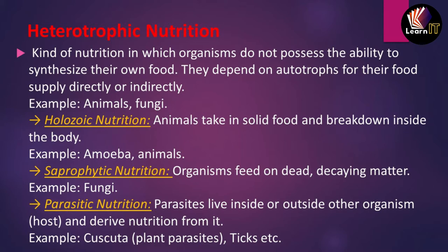Examples of heterotrophs are animals and fungi. Some organisms depend directly on plants and some depend indirectly on plants, which are the autotrophs. Heterotrophic mode of nutrition has been divided into three types: holozoic mode of nutrition, saprophytic mode of nutrition, and parasitic mode of nutrition.